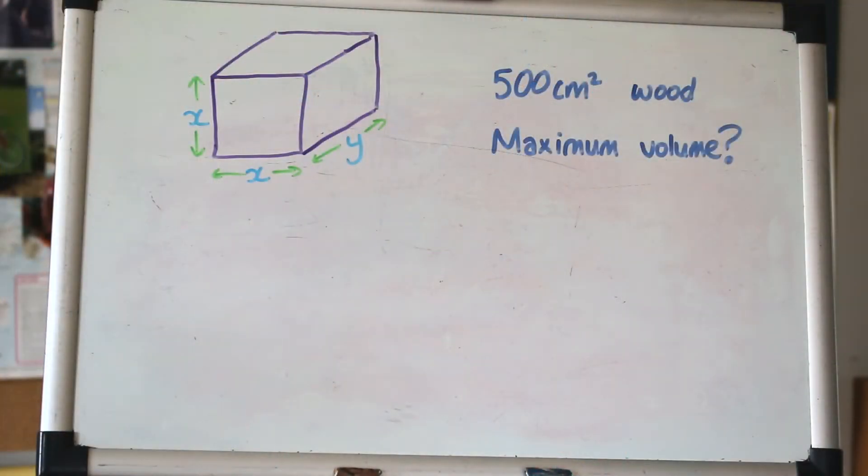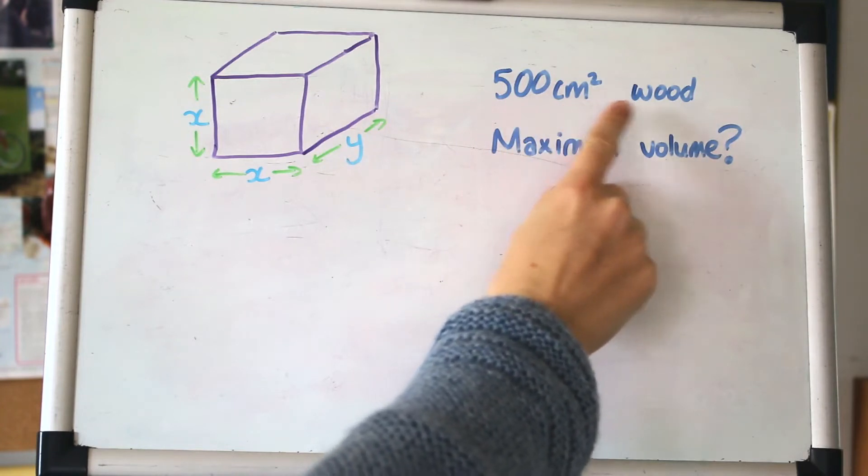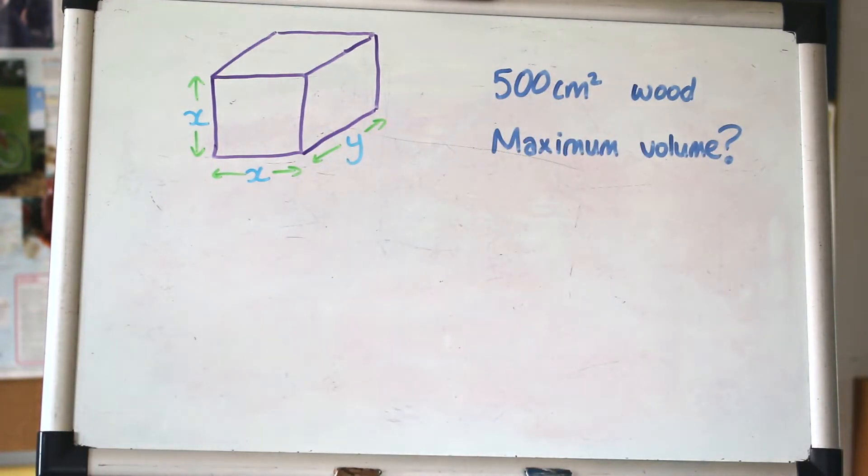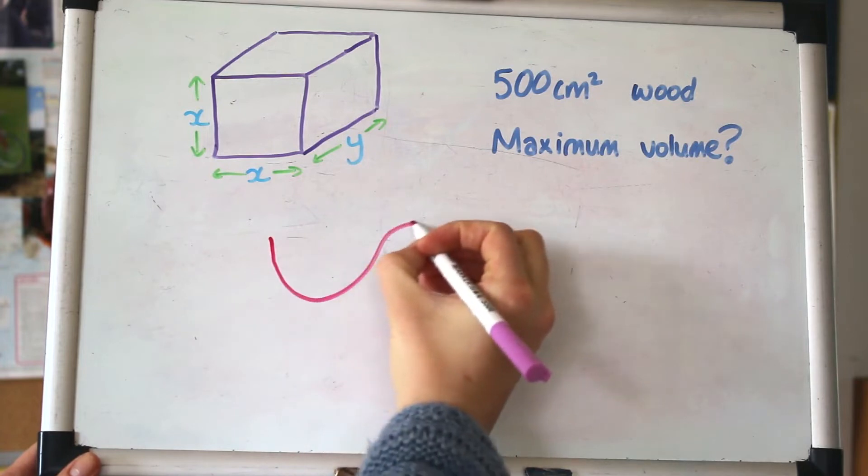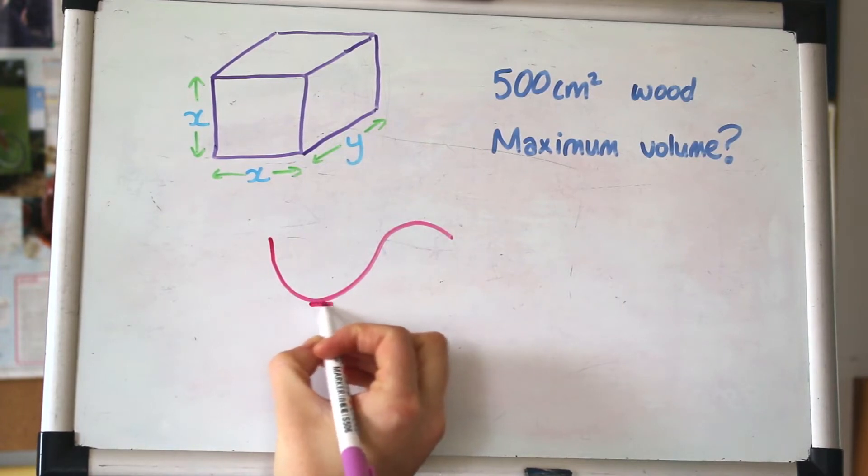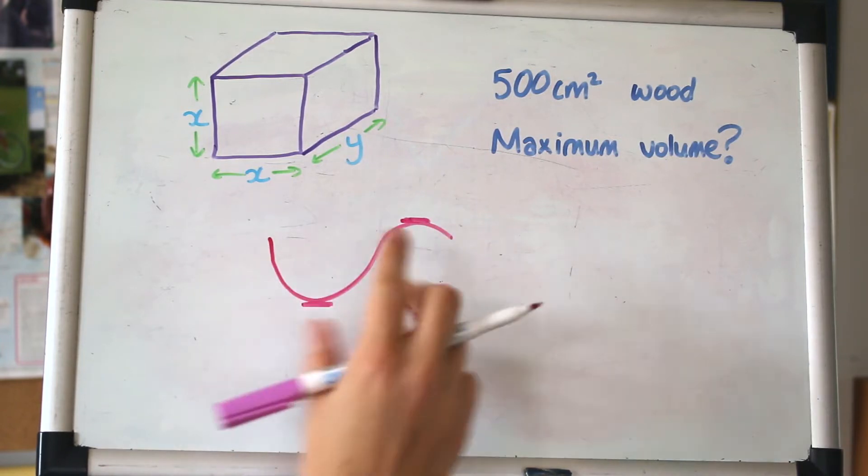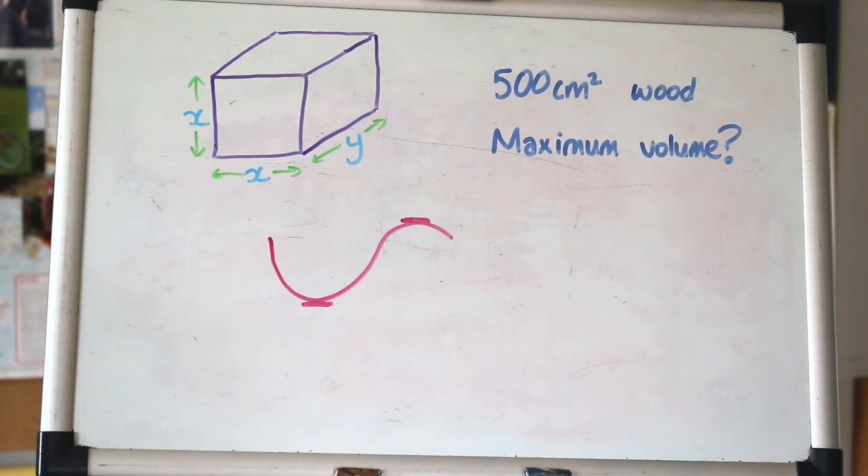Here we have our first problem. We have a cuboid made out of 500 cm² of wood and we want to find the maximum volume. Any question asking for a maximum or a minimum is about differentiation. That's one of the really powerful applications of differentiation.